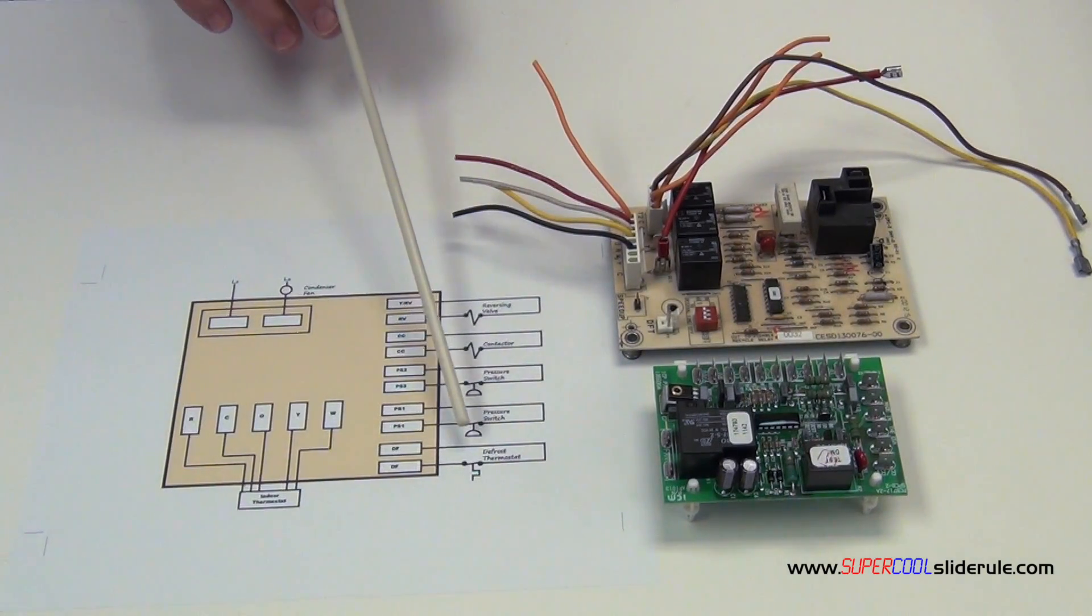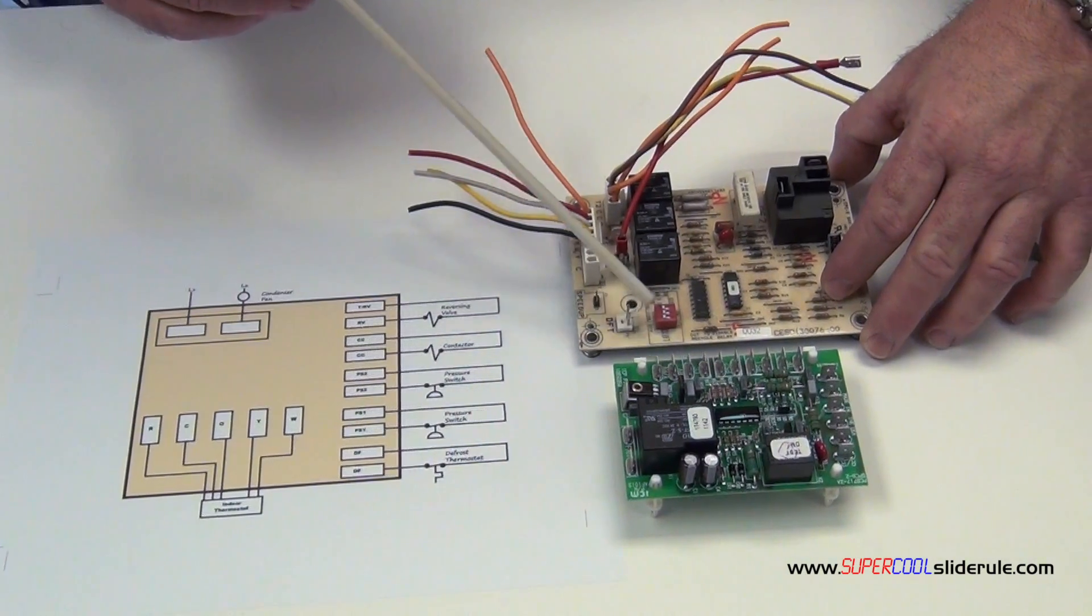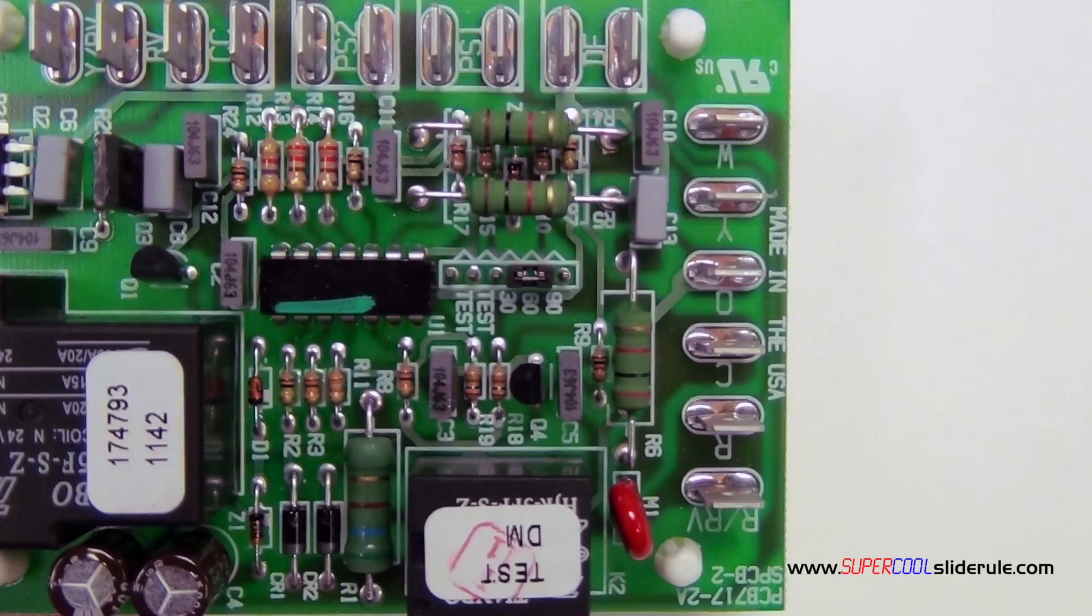That time is important because every one of these boards will have defrost settings. This one has dip switches that you set to control how long it runs before it goes into defrost, and this one here uses a jumper right there that you can manually change the time that it runs before it defrosts.